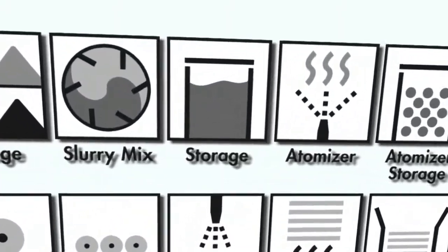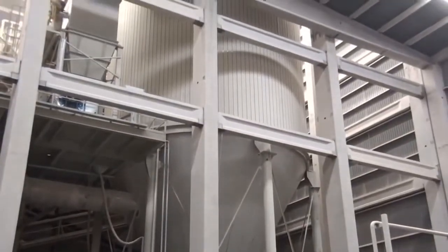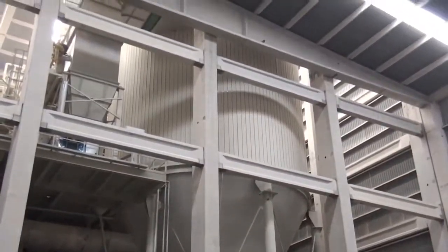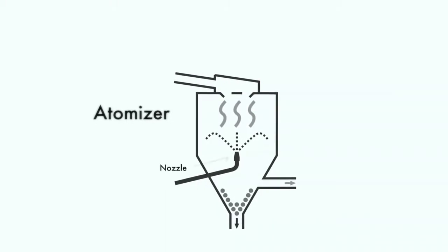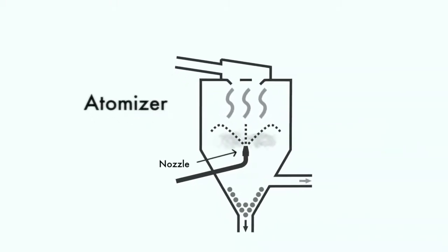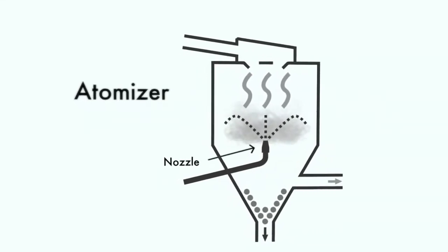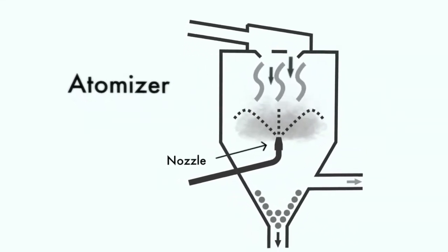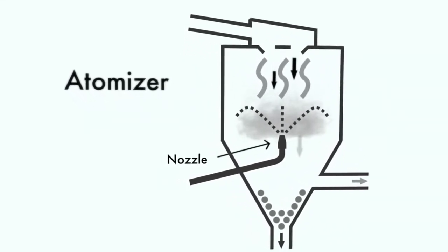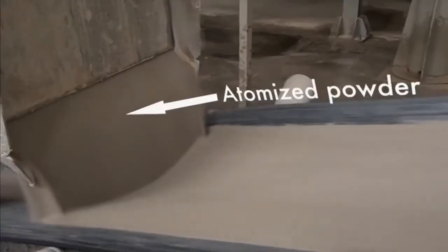The slurry is then transferred to large underground storage tanks, then fed into an atomizer. The atomizer is equipped with a nozzle that sprays the slurry into the middle of a large tank that is fed with a current of hot air. As the slurry becomes airborne, it rapidly dries to form atomized powder.